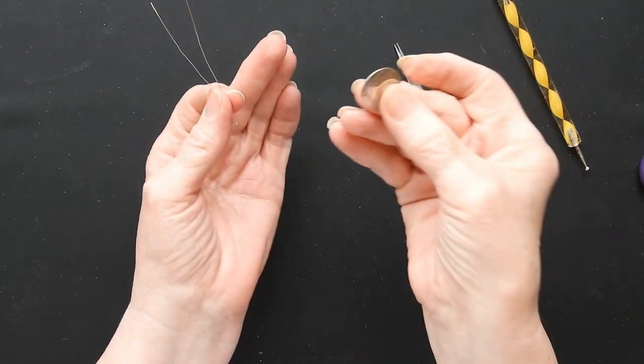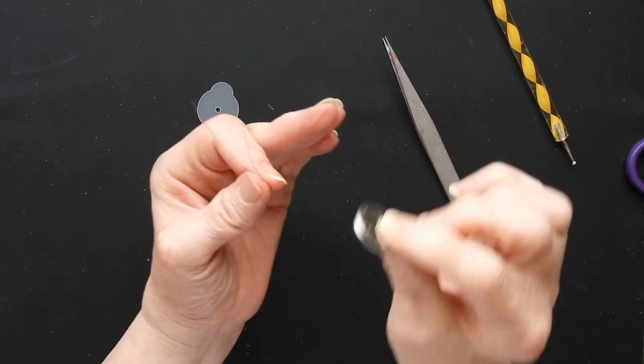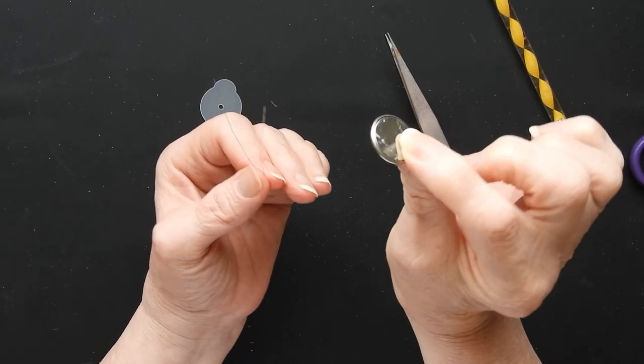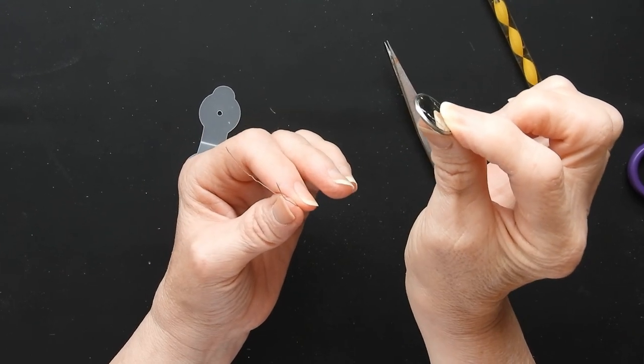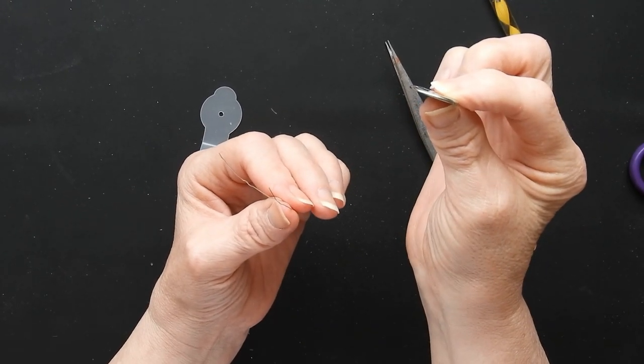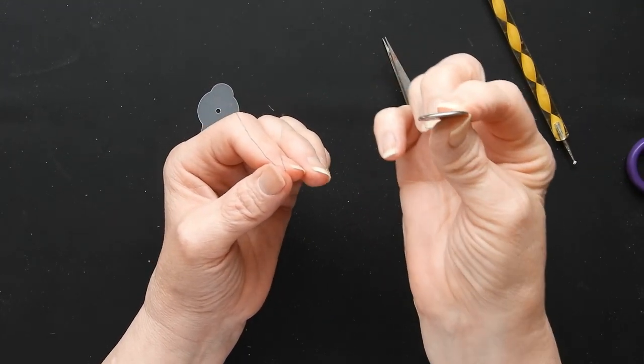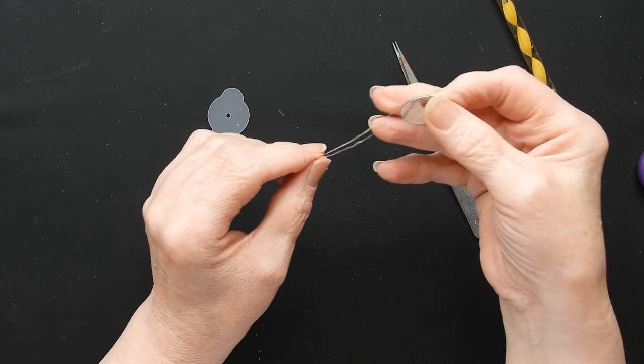So here's the battery. Now this is nice and thin. This is a CR2016 battery and if you have a 2032 it's going to be chunkier than this. But the 2016 is very very good.